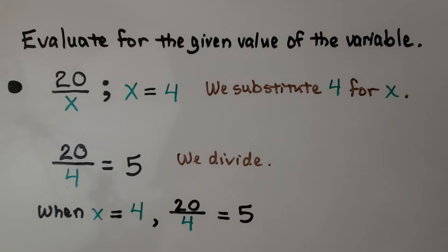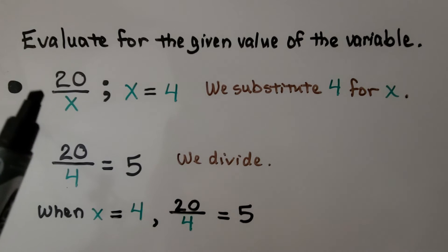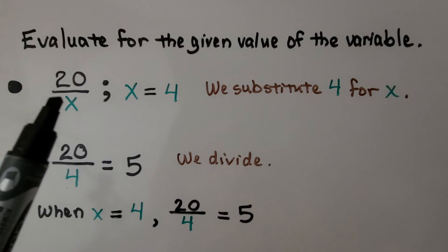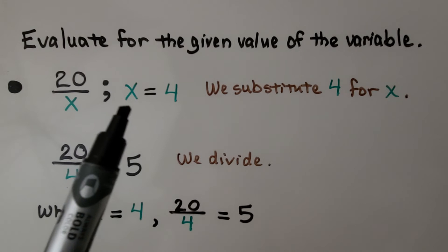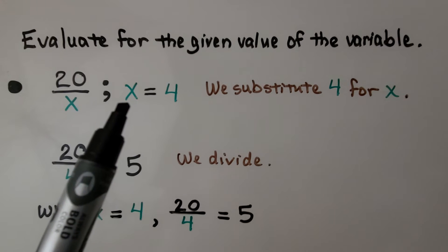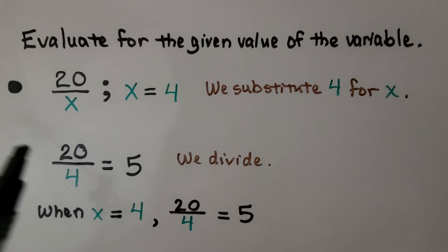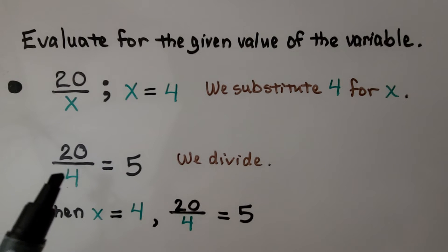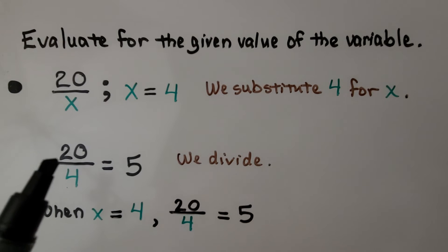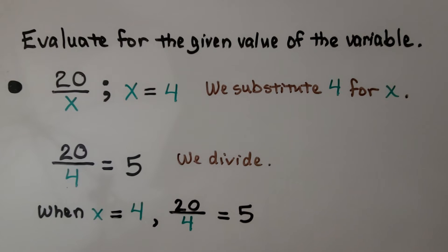So it's telling us to evaluate for the given value of the variable. We have 20 over x. We know this means 20 divided by x, and it's telling us that x is equal to 4. So we substitute 4 for the x, and we divide. 20 divided by 4 is equal to 5. When x is equal to 4, 20 divided by 4 is equal to 5.